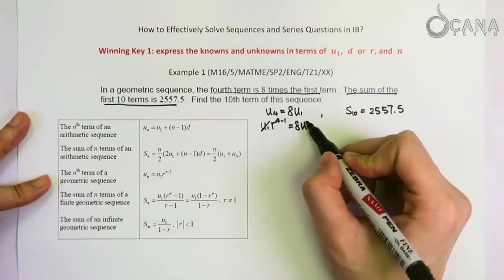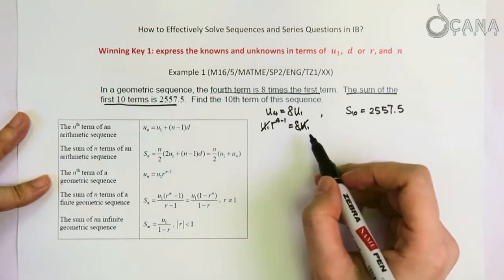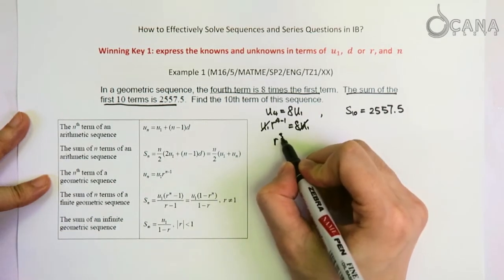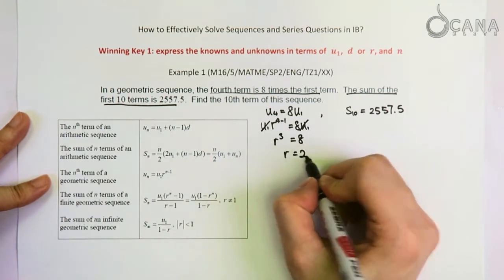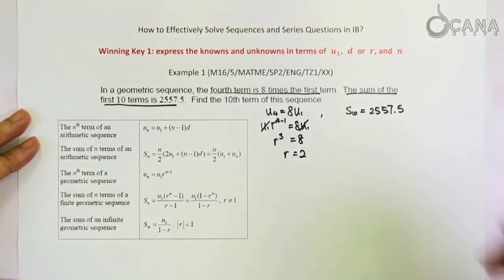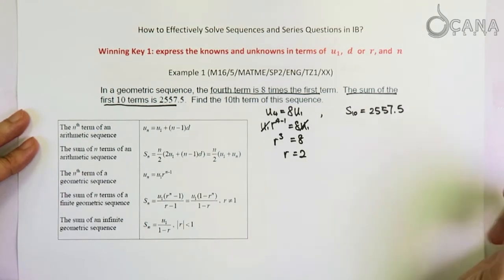That means we can divide both sides of the equation by U1. And simplifying this equation gives R to the power 3 equals to 8. So R equals to 2. This is the first equation done.